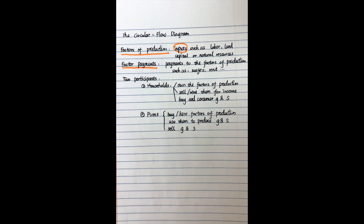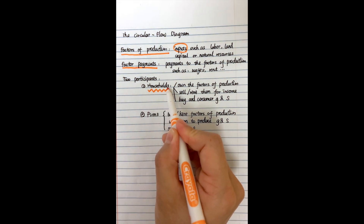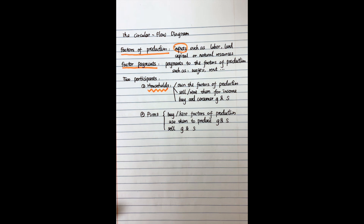In the circular flow diagram, there are two participants. The first one is households. Households own factors of production — they have their labor, their house, their land or capital — and they can sell them for income. On the other hand, households will also buy and consume goods and services.